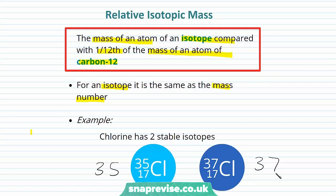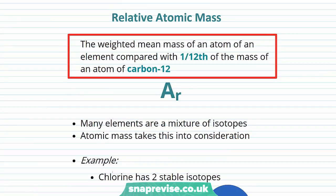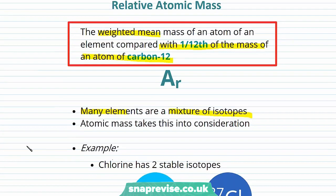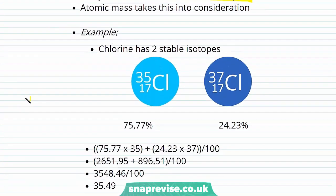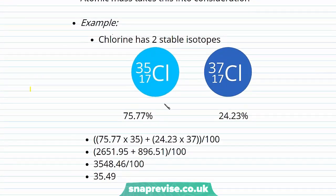Now let's look at relative atomic mass. The definition is the weighted mean mass of an atom of an element compared with 1/12 of the mass of an atom of carbon-12, and we use Ar to represent this. Relative atomic mass is really quite useful because it takes into account the fact that many elements are a mixture of isotopes. Going back to our chlorine example, chlorine has two stable isotopes — chlorine-35 and chlorine-37. About 75.77% is chlorine-35 and the other 24.23% is chlorine-37.